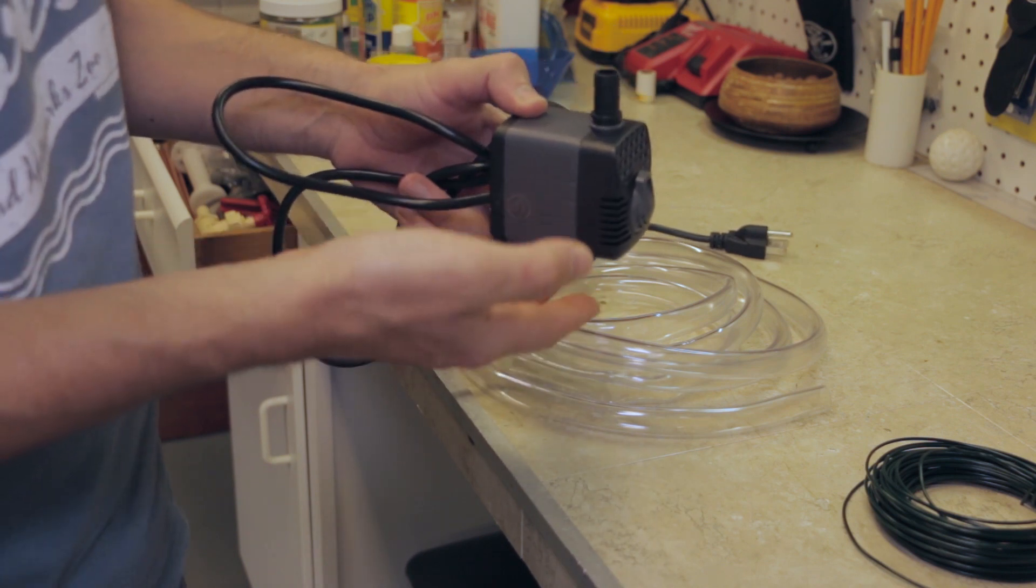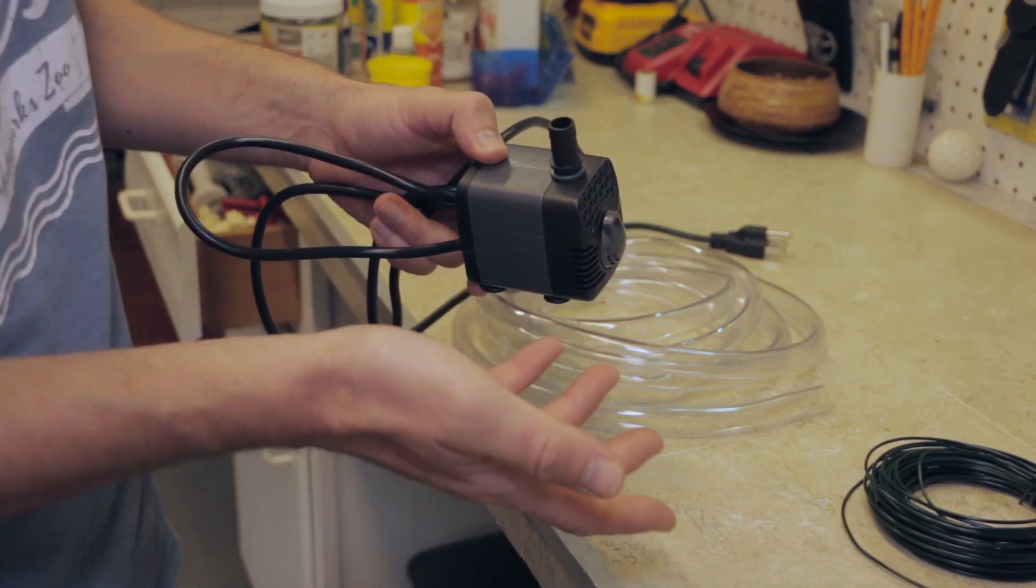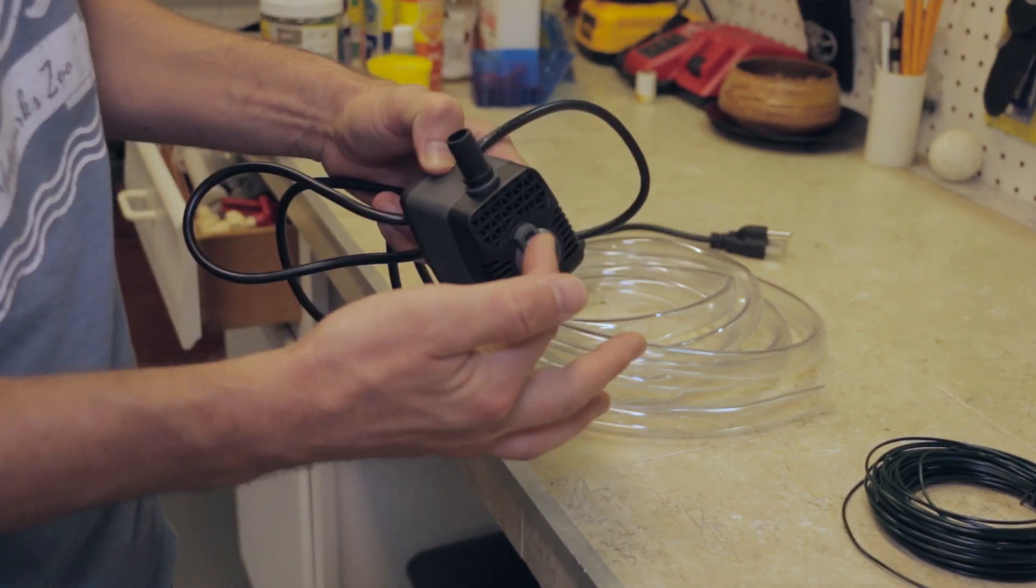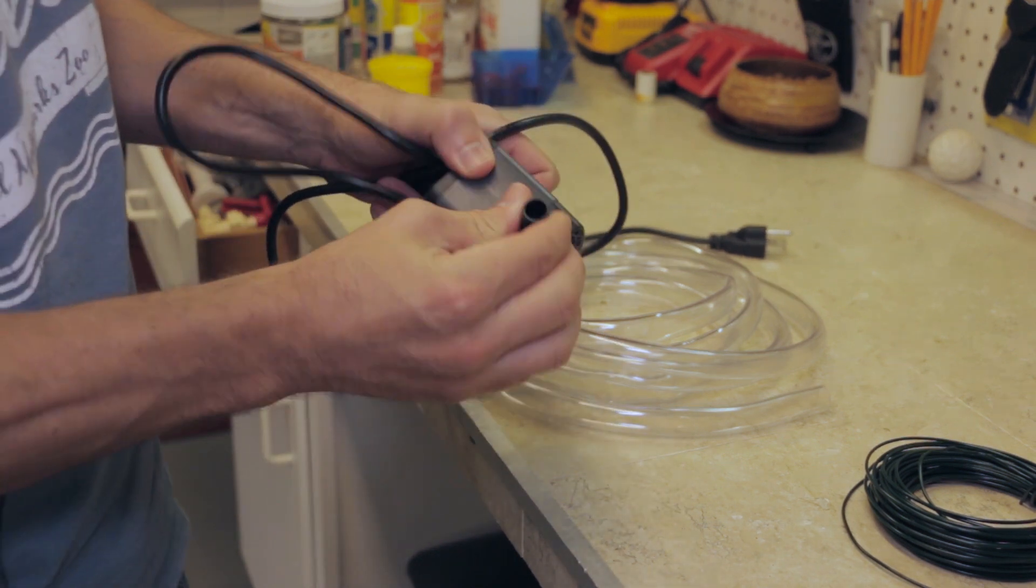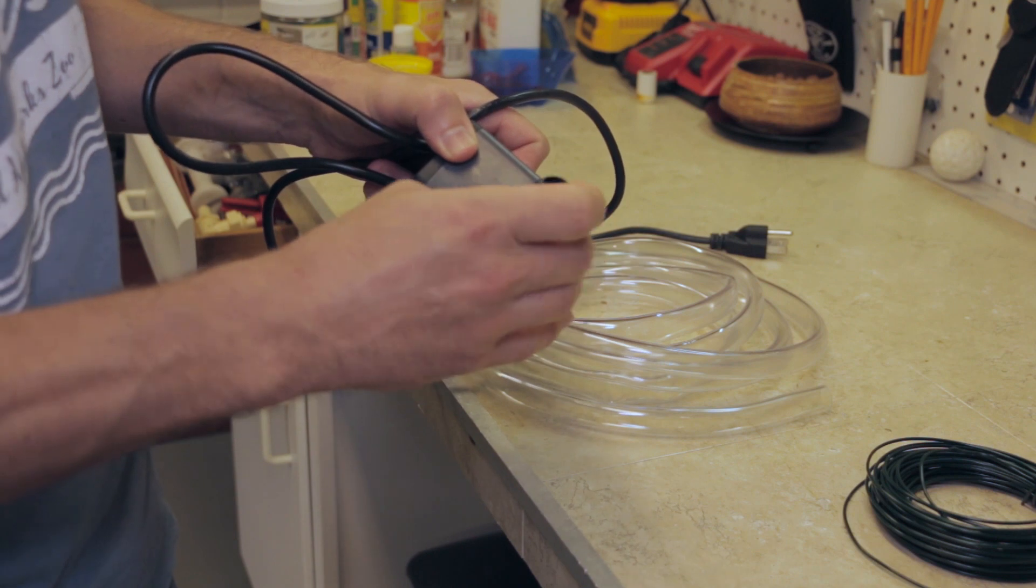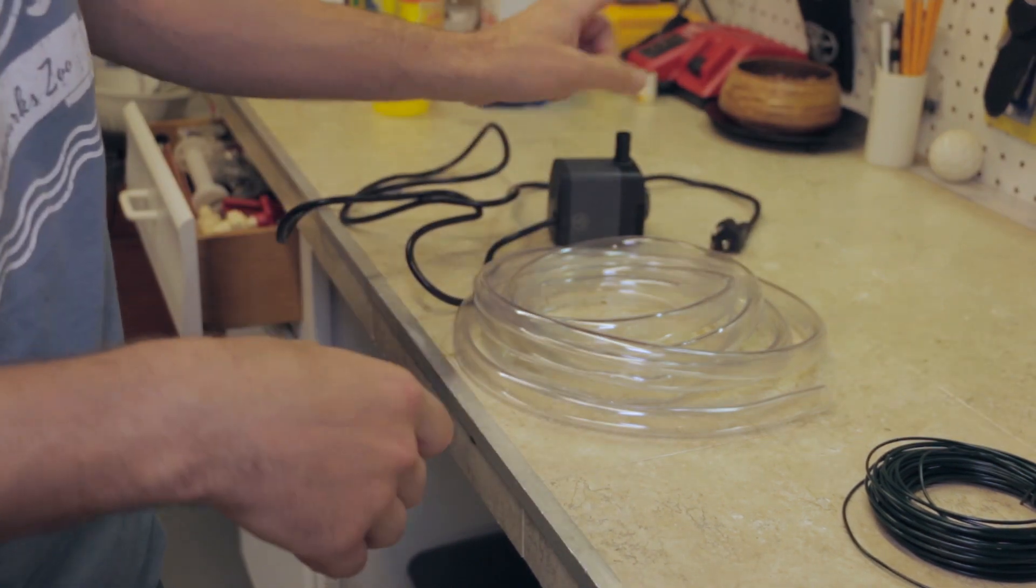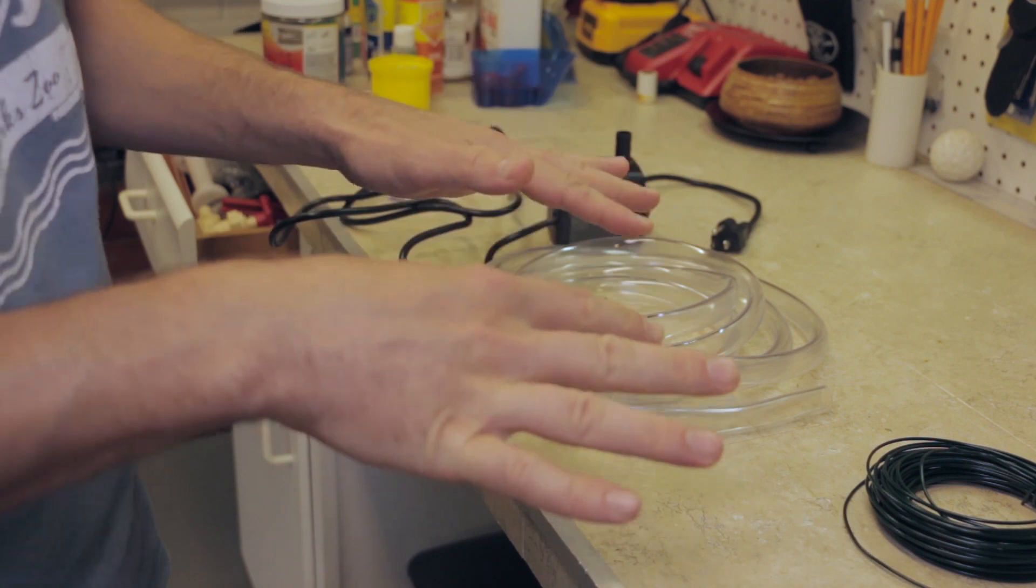I recommend getting at least a 200 gallon per hour pump or larger, and then you can always dial it back. For me this is going to work fine. Half inch tubing fits this little nozzle on the end, so all you got to do is attach that to the tubing and put it in the container.